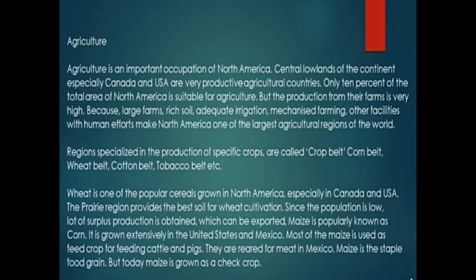Another crop is maize, popularly known as corn. It is grown extensively in the United States and Mexico. Most of the maize is used as feed crops for cattle and pigs, which are raised for meat in Mexico. Maize is the staple food grain, but today maize is also grown as a cash crop.